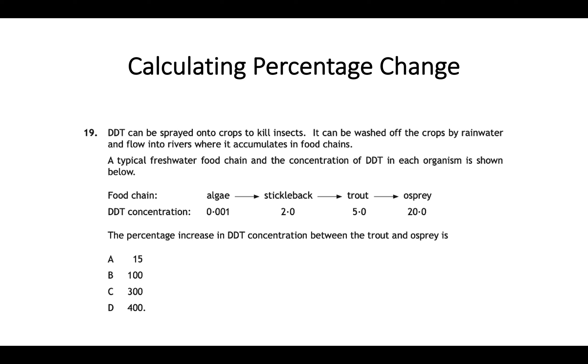So I'll talk through this example and you can go and try this yourself. But DDT can be sprayed onto crops in order to kill insects. It can be washed off the crops by rainwater and then flow into rivers where it accumulates in food chains. A typical freshwater food chain and the concentration of DDT in each organism is shown below.